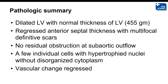My conclusion is that this is a dilated LV with almost normal or thinning of the LV free wall, but the base of the myocardium still retains its thickness, and the heart weight is increased — indicating hypertrophy. Anterior septal wall thickness is regressed, and multifocal scar is definitive but not larger than usual. There is no residual obstruction in the sub-aortic outflow, and a few individual cells with hypertrophied nuclei and slightly disorganized cytoplasm provided some evidence supporting this as a burnout case of hypertrophic cardiomyopathy.